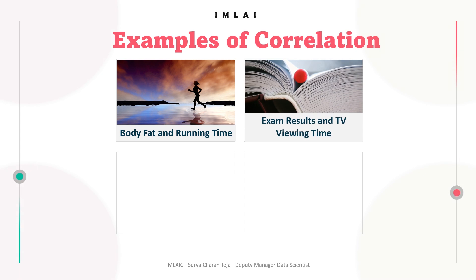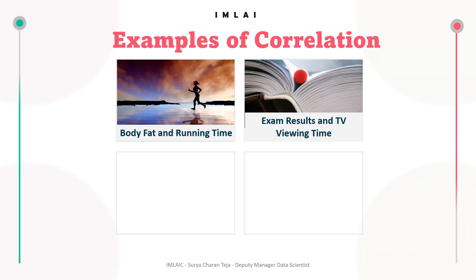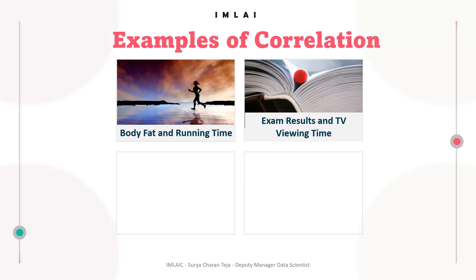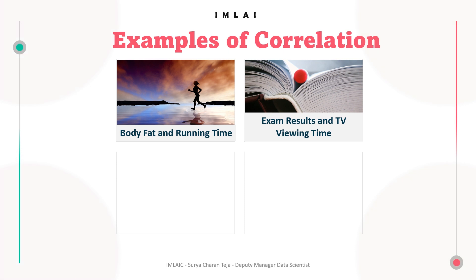The second example is exam results and TV viewing time. Exam results typically suffer when a student watches more television. In other words, there is a negative correlation between the amount of time spent watching TV and exam grade. Exam results decline as TV viewing time increases — these are also inversely proportional, giving a negative correlation coefficient.